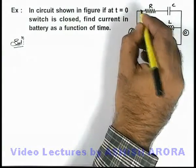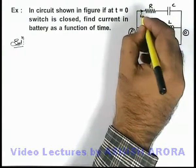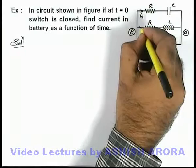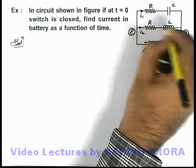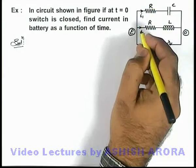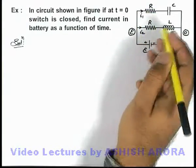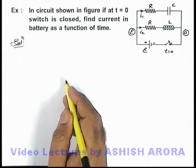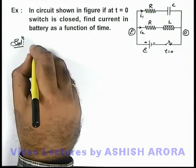So a charging current of capacitor i1 will start flowing through RC branch and a current i2 starts going through the RL branch. Both of these currents we have already studied in RC circuits and RL circuits recently, so here we can directly write.